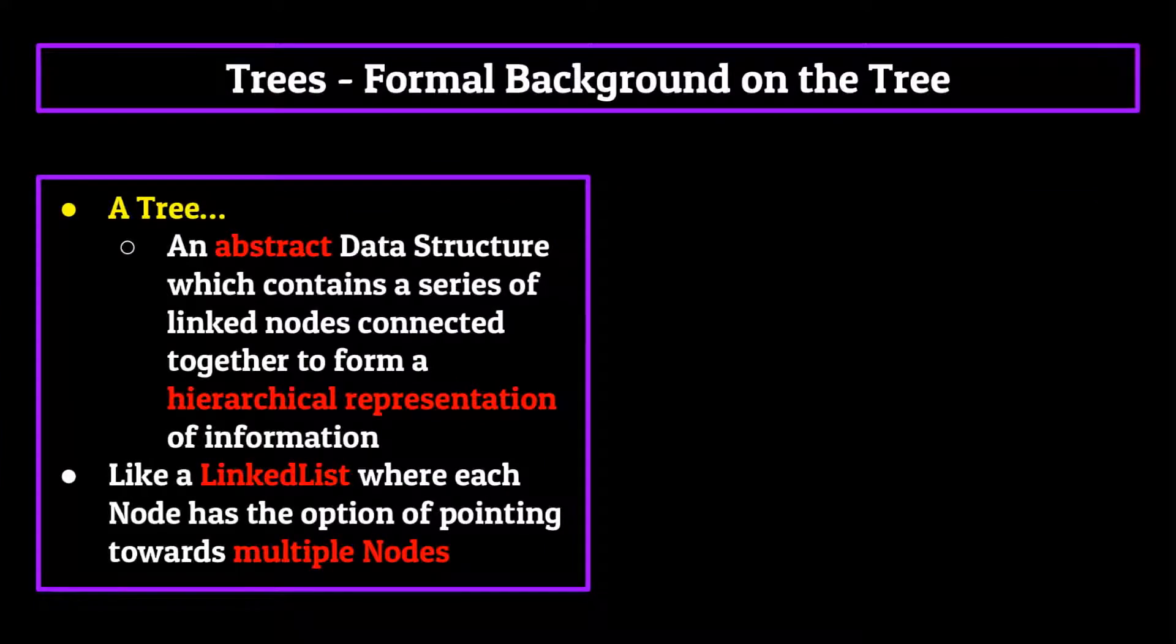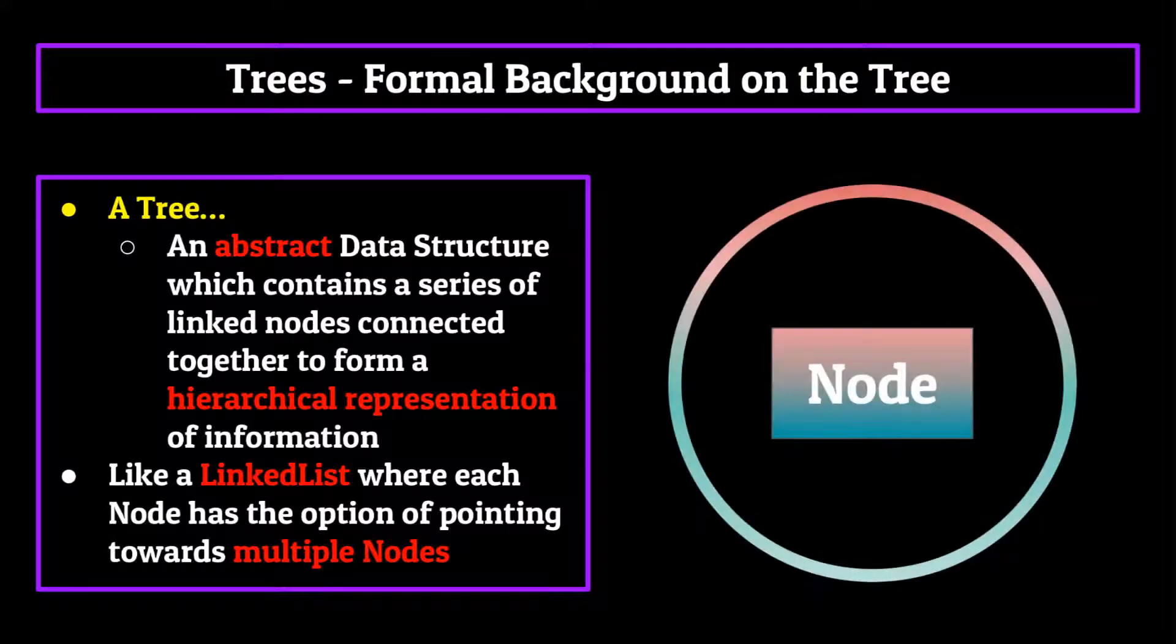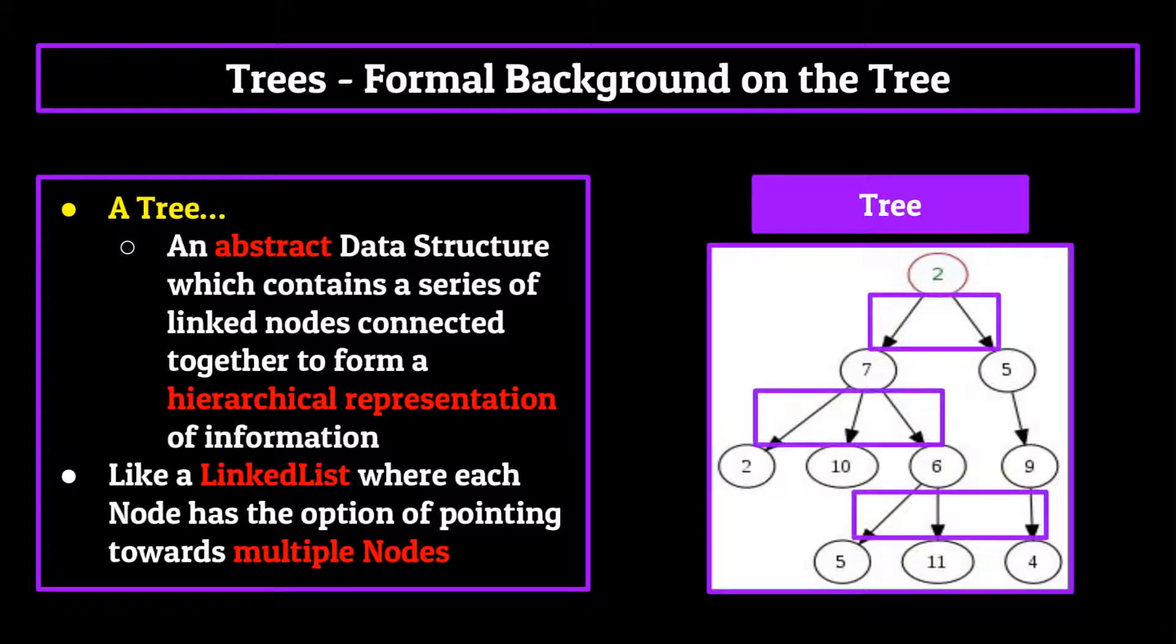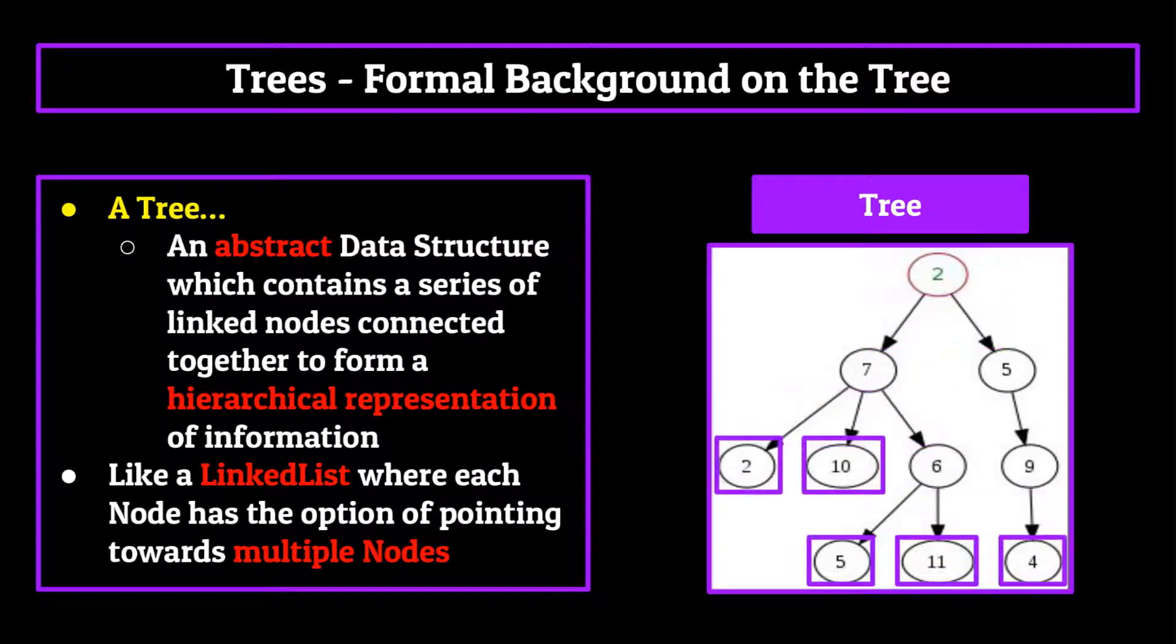Well, a tree is an abstract data structure which contains a series of linked nodes connected together to form a hierarchical representation of information. The actual information is stored within these nodes and the collective is what's known as the tree. This is sort of like a linked list only instead of each node only pointing to one location, it has the option of pointing towards multiple and also branching off on its own and pointing to known nodes.